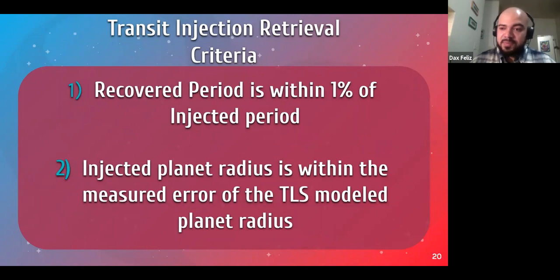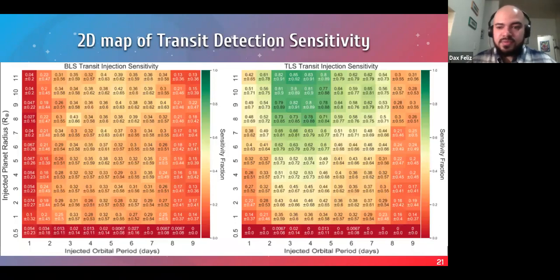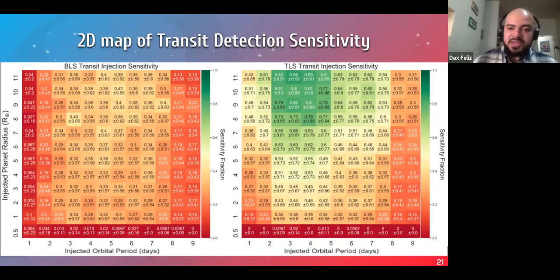And in order to validate our ability to recover these injections, we had two criteria where one, we wanted to consider that the recovered period is within 1% of the injected period. And two, that the injected radius is within the measured errors of the TLS model planet radius. So in total, when we consider those two criteria, when we use BLS versus when we use TLS, TLS seems to perform much better in being sensitive to these different kinds of transits than BLS does. So on this plot here, we have our injected planet radius on the y-axis and our injected orbital period on the x-axis. And the color scale is the sensitivity fraction or the recovery rate of our recovered transits. So if it has a value of one, that means we recovered every single one. If it has a value of zero, it means we recovered absolutely none of them.